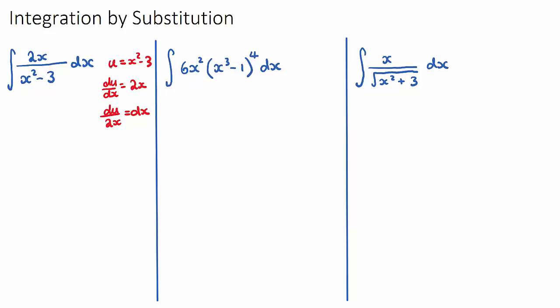We've identified the parent, we let that equal u, we derived it, and then we made dx the subject. Then, we go back to our question, and we rewrite our integral, and we always put a divided by sign. I'm just going to write 2x in, and what I'm going to do is just replace my parent function, x squared minus 3, with the letter u. I've substituted u in, integration by substitution.